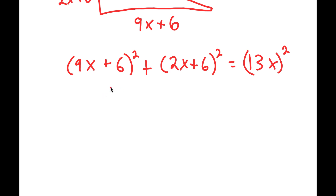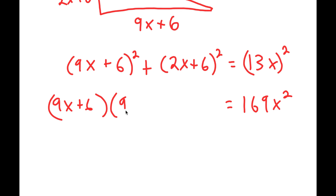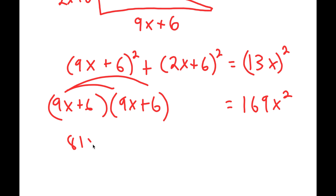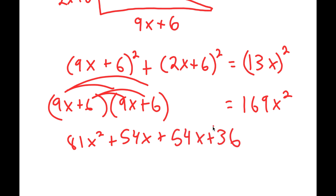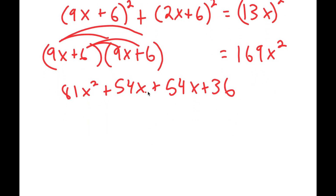Now all that's left is to solve. 13x squared is 169x squared. If we expand 9x plus 6, it becomes (9x+6)(9x+6). Distributing the 9x, I get 81x² plus 54x plus 54x plus 36, which simplifies to 81x² plus 108x plus 36.